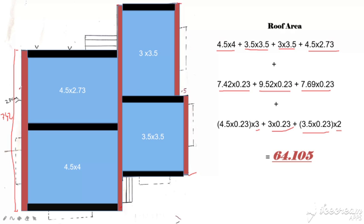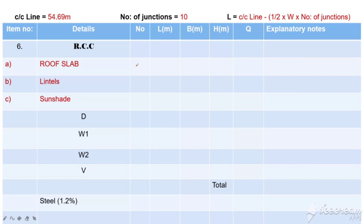Now the first roof slab. How many times do we support the roof slab? We also get around the roof slab. So we get the roof area of 64.105.